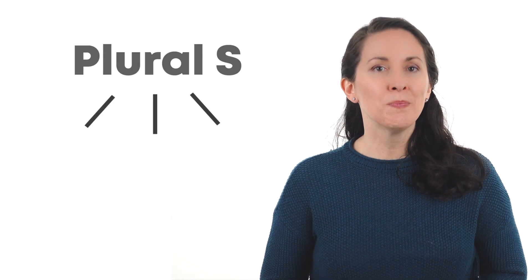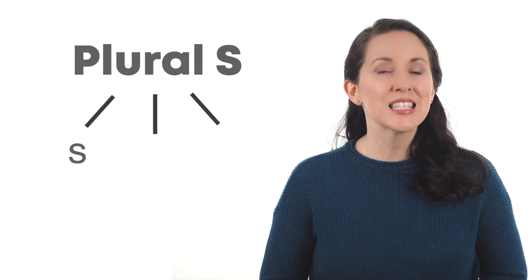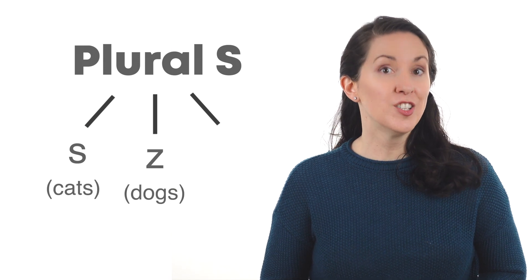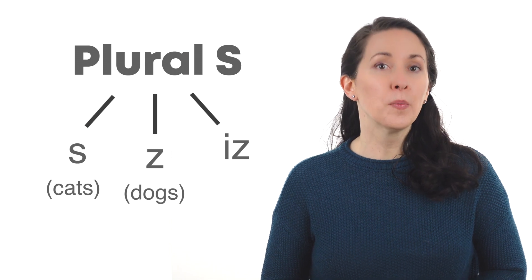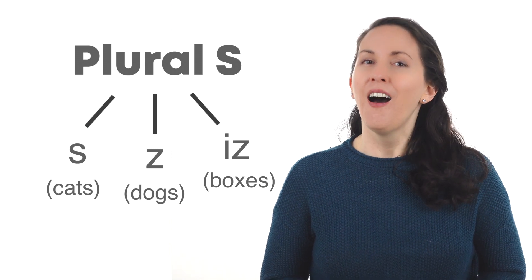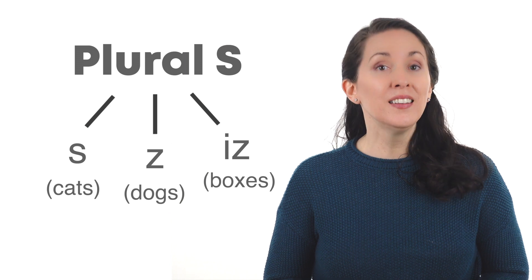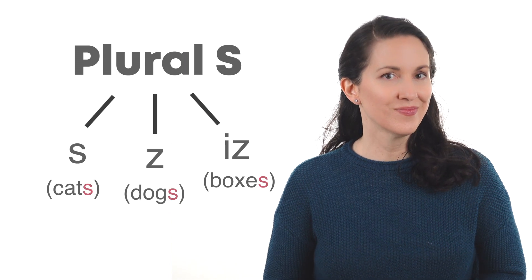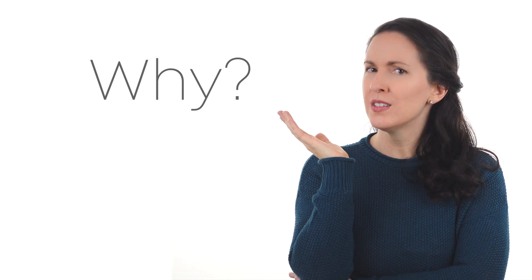Plural S can be pronounced S like cats, Z like dogs, and IS like boxes. All three words end with the same letter, S. Why are they pronounced differently?